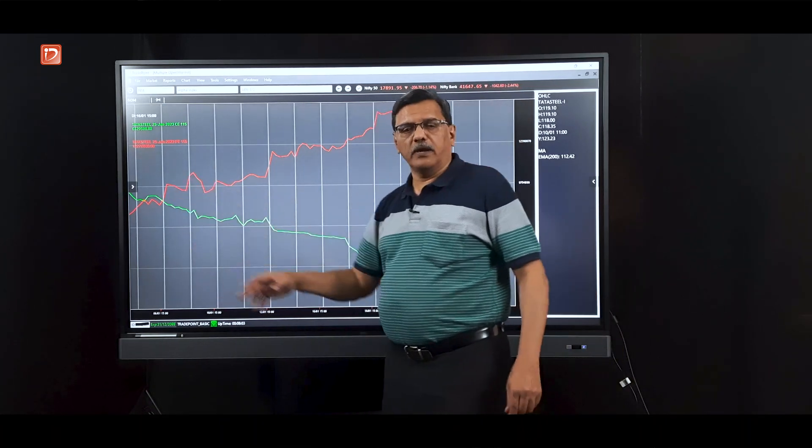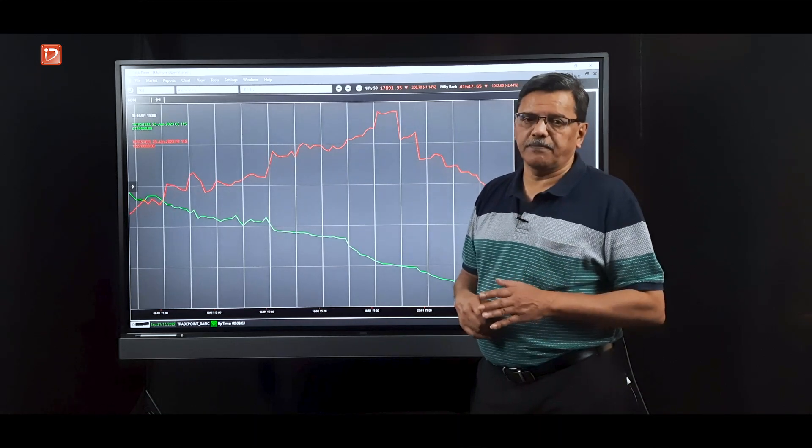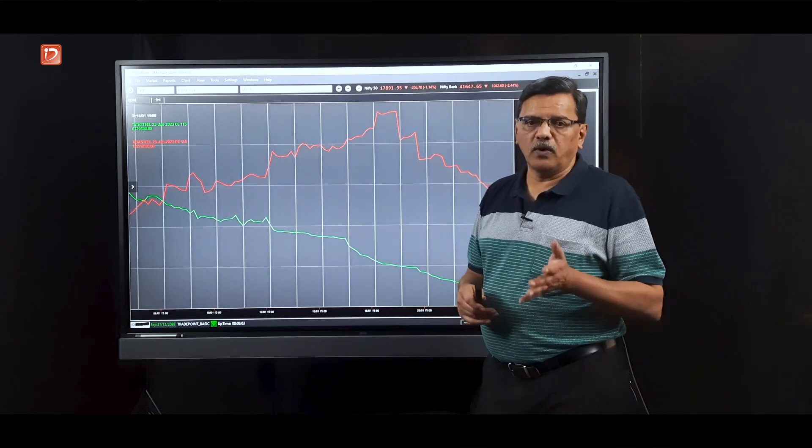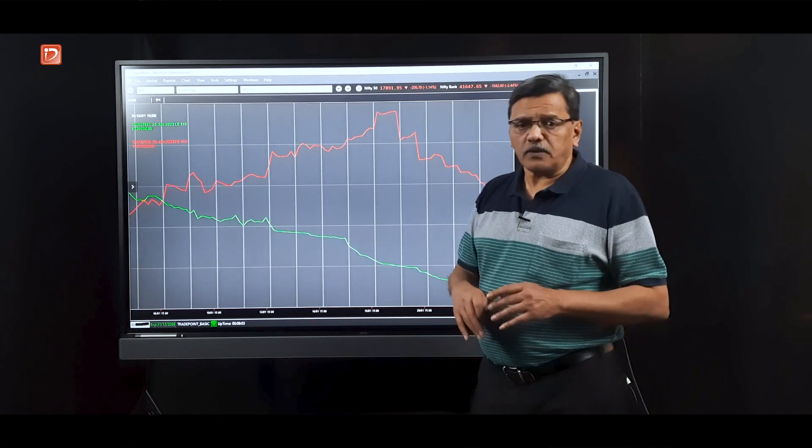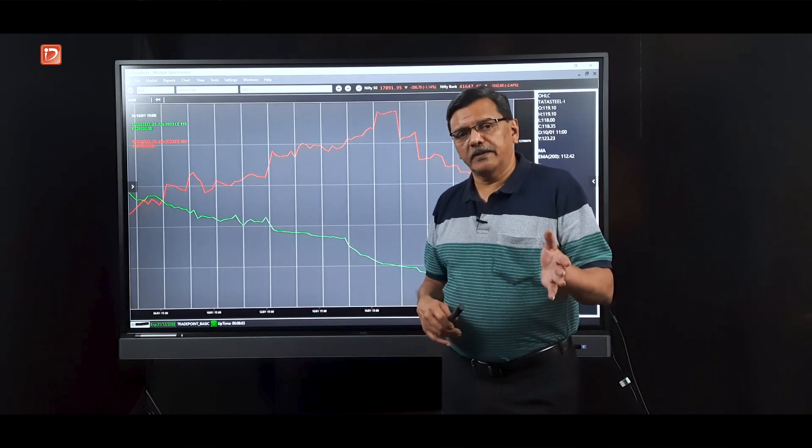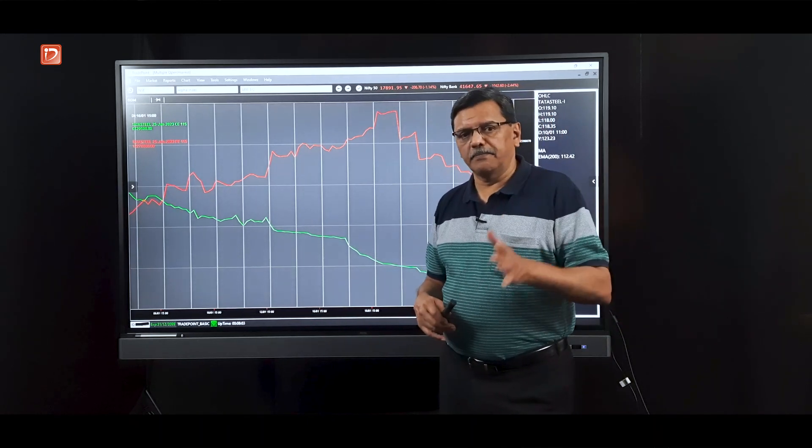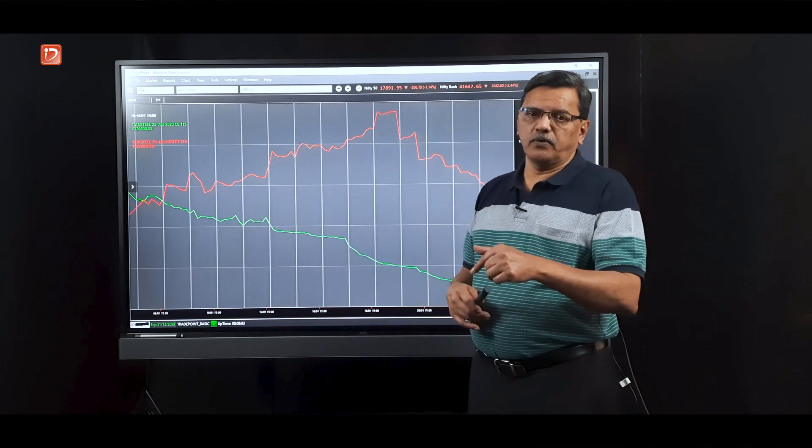Here the call open interest is going down, which means covering is happening. At the same time, the put is much higher. So any time when you see the put open interest at a specific strike price above 1.1-1.2, that means that level is going to act as a support, which in this case was 115. So if the bus is crowded at 120, that doesn't mean the stock is going to crash.